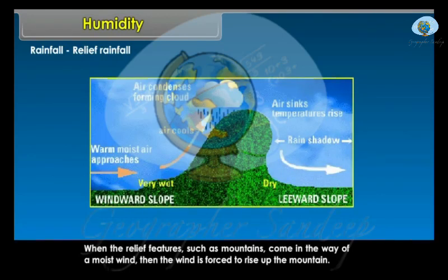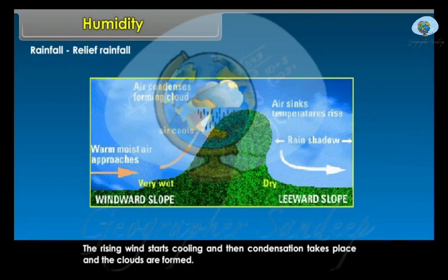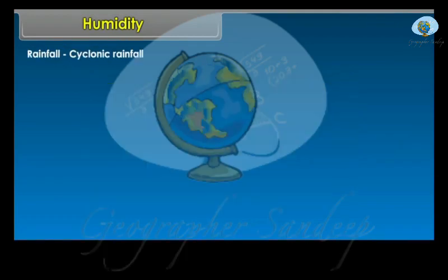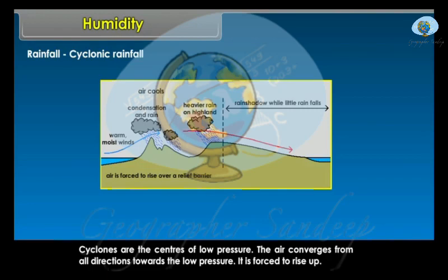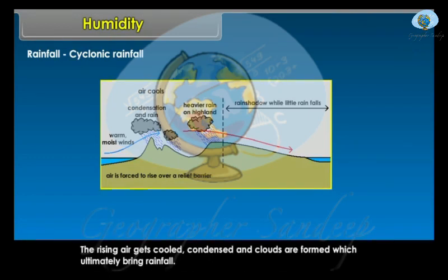Relief Rainfall: When relief features, such as mountains, come in the way of a moist wind, the wind is forced to rise up the mountain. The rising wind starts cooling, condensation takes place, and clouds are formed, bringing rainfall. Cyclonic Rainfall: Cyclones are centres of low pressure. The air converges from all directions towards the low pressure, and is forced to rise up. The rising air gets cooled and condensed, clouds are formed, which ultimately bring rainfall.